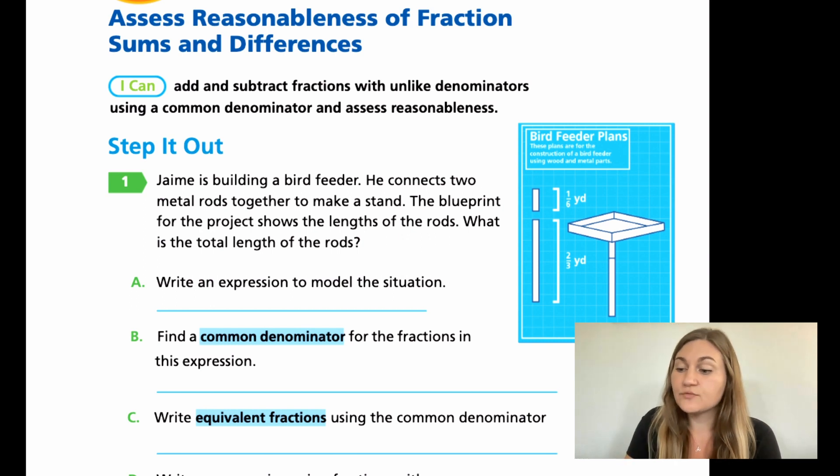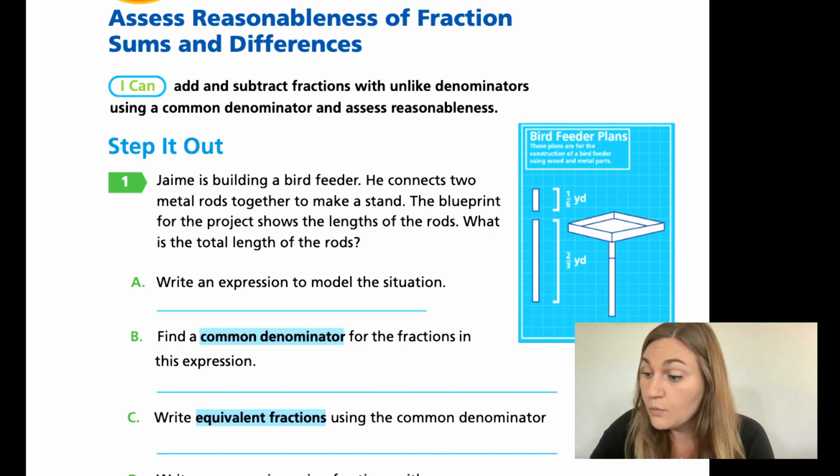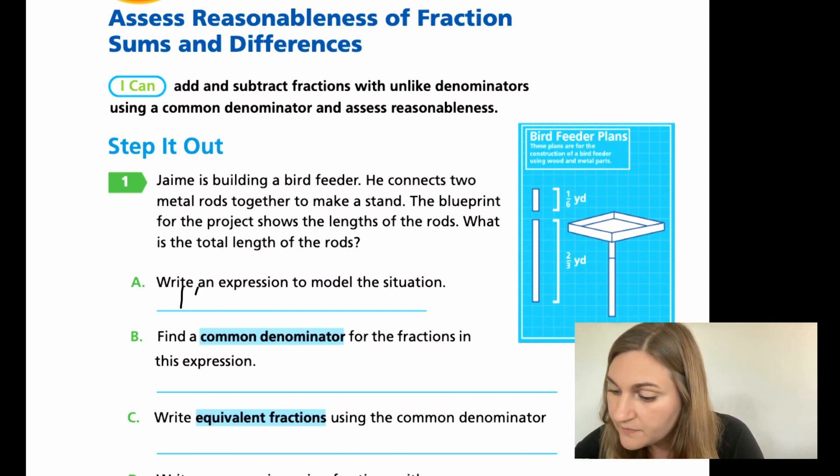Okay, so for A, it says write an expression to model the situation. And remember, the expression is the problem without the equal sign. So an expression to model the situation would be our one-sixth added to our two-thirds to find out what the total length would be. So one-sixth plus two-thirds.